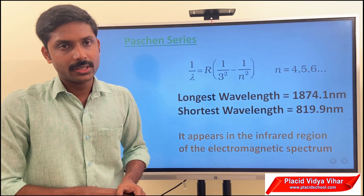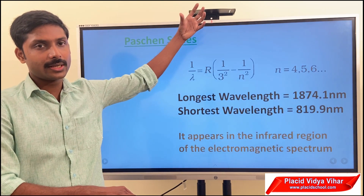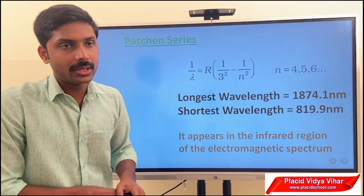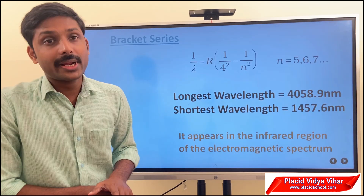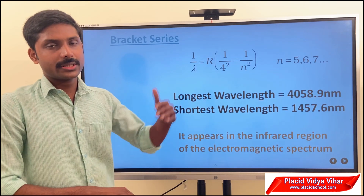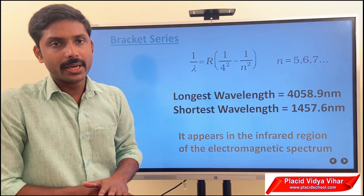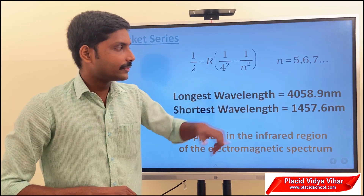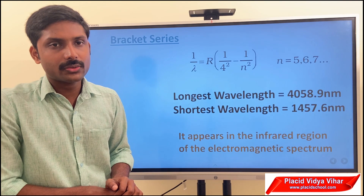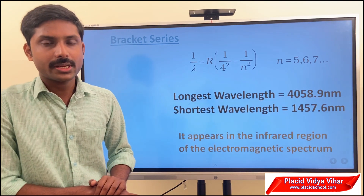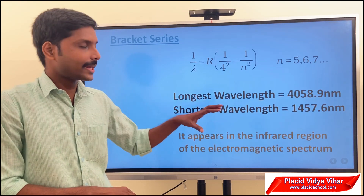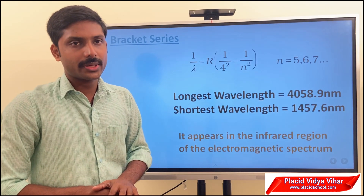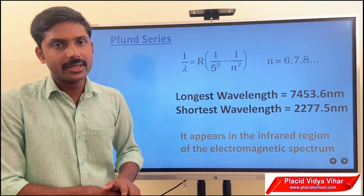Whenever there is a transition from any higher energy level to the third energy level, the series obtained is called the Paschen series. For the Brackett series, the transition is from any higher level to the fourth energy level. The longest wavelength is 4058.9 nanometers and the shortest is 1457.6 nanometers. The Brackett series also appears in the infrared region.